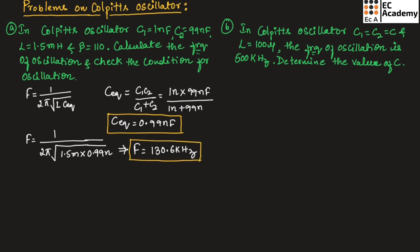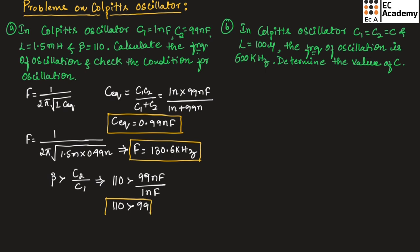Now, to check the condition for oscillation, beta should be greater than C2 / C1. Substituting the values, beta is 110, which should be greater than 99 nanofarad / 1 nanofarad. So we get 110 is greater than 99, which means it satisfies the condition for oscillation.